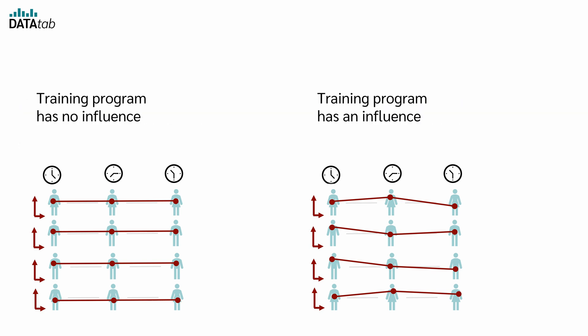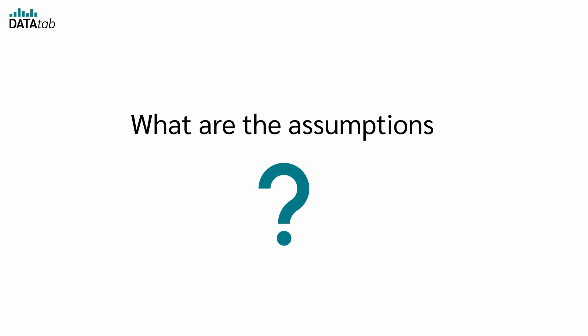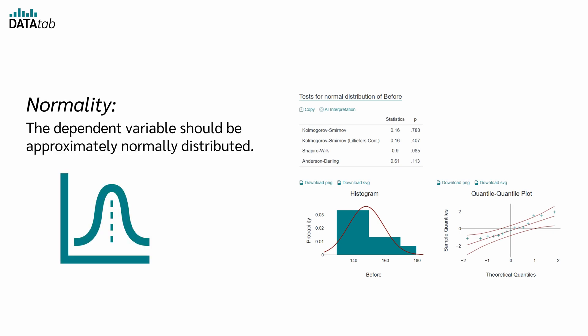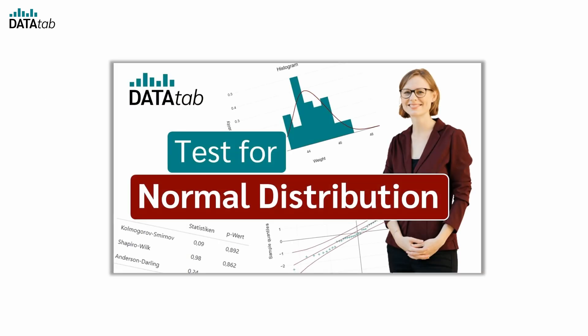In our example, the null hypothesis states that the training program has no influence on physical fitness, i.e. that physical fitness does not change over time. And the alternative hypothesis assumes that the training program does have an influence, i.e. that physical fitness changes over time. To correctly apply repeated measures ANOVA, certain assumptions must be fulfilled. Number one: normality — the dependent variable should be approximately normally distributed. This can be tested using the QQ plot or the Kolmogorov-Smirnov test. Please watch my video on testing for normal distribution for more information.